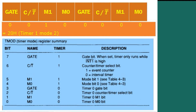To configure TMOD for Timer 1 Mode 2: GATE = 0, T/T bar = 0, M1 = 1, M0 = 0 (Mode 2), and the last 4 bits are 0 (for Timer 0). This gives the value 20h, which indicates Timer 1 Mode 2.